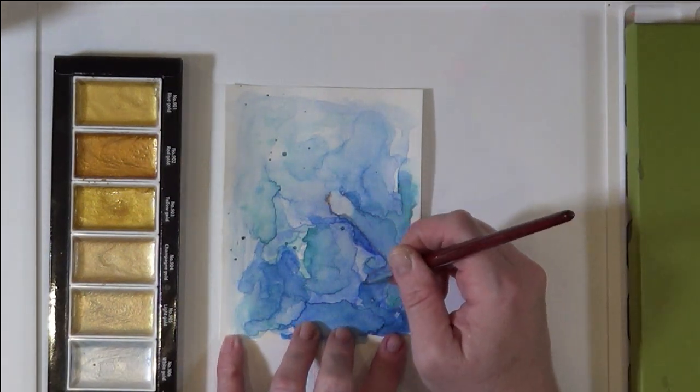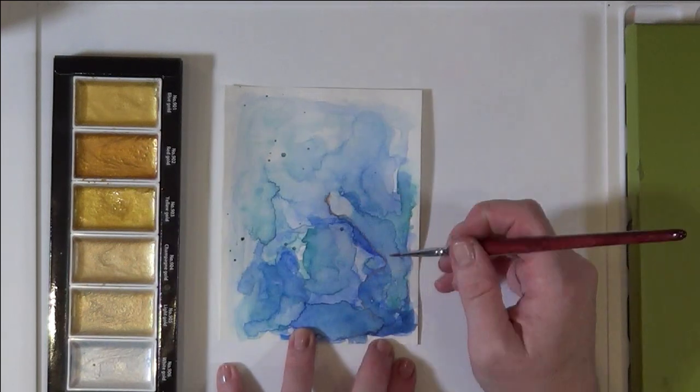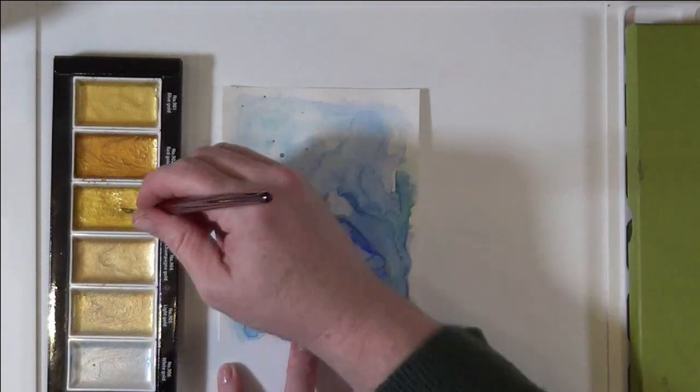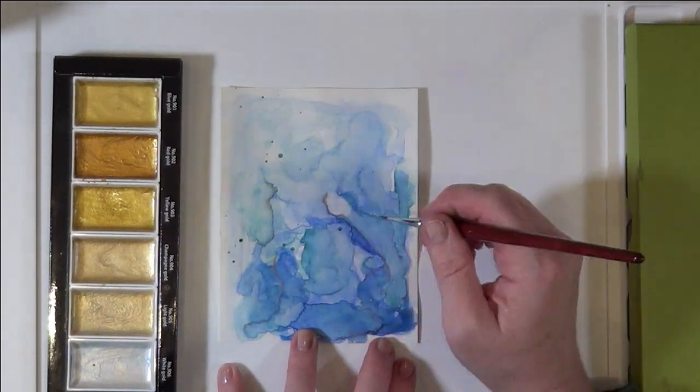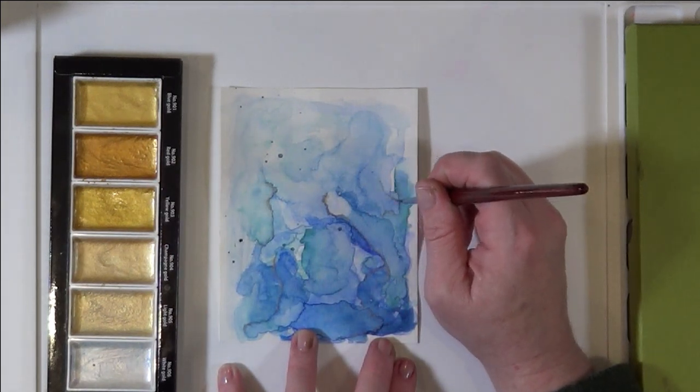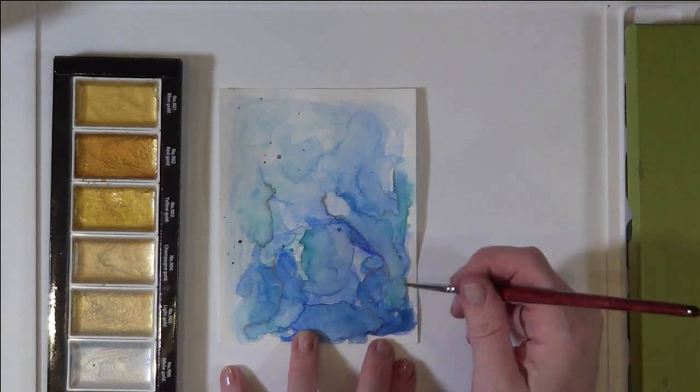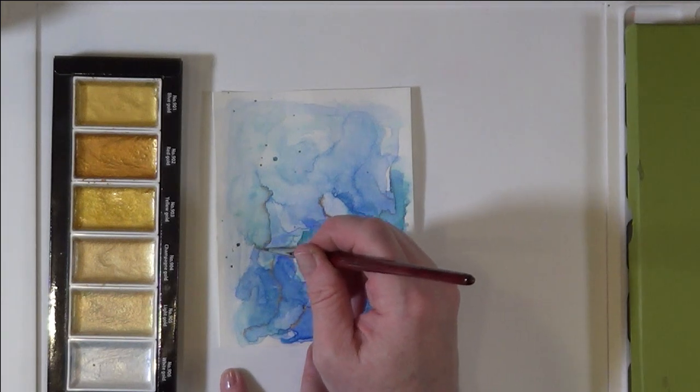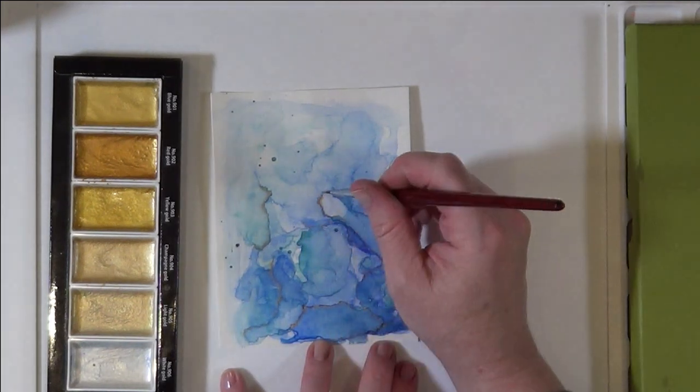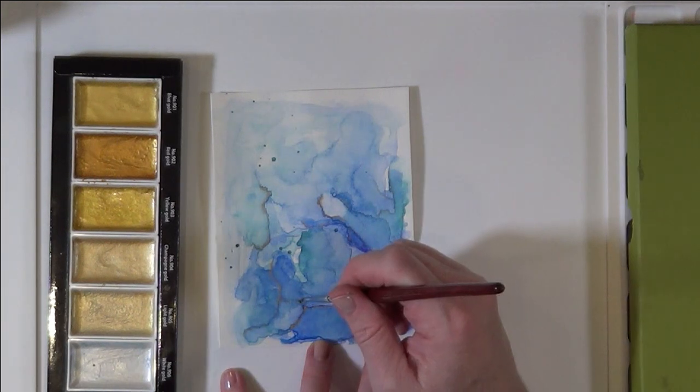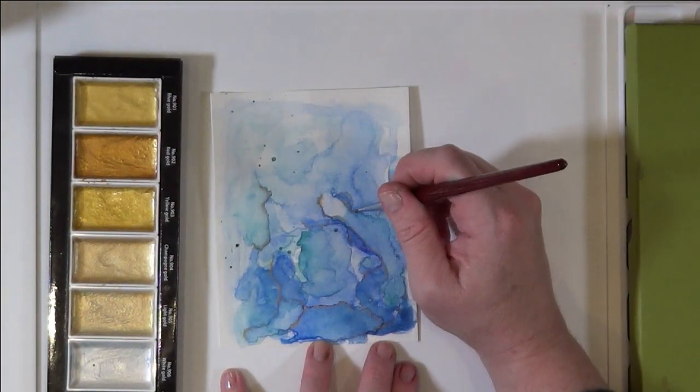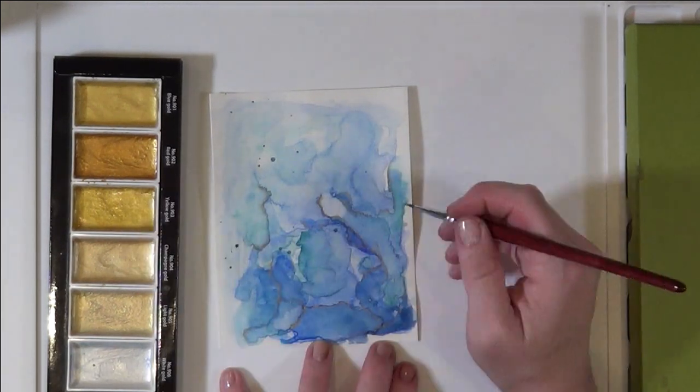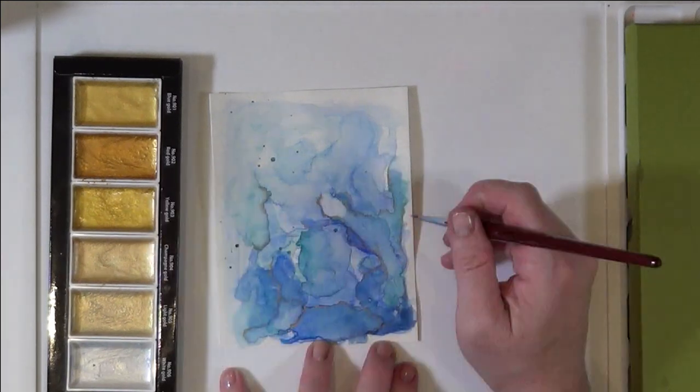I'm going to go in here with a teeny tiny number two round watercolor brush, and I'm going to use the Gansai Tambi starry colors. I'm going to use the gold - it's this middle gold color, more yellowy. It's actually one I don't use a lot, but I thought it looked really good with the blue.